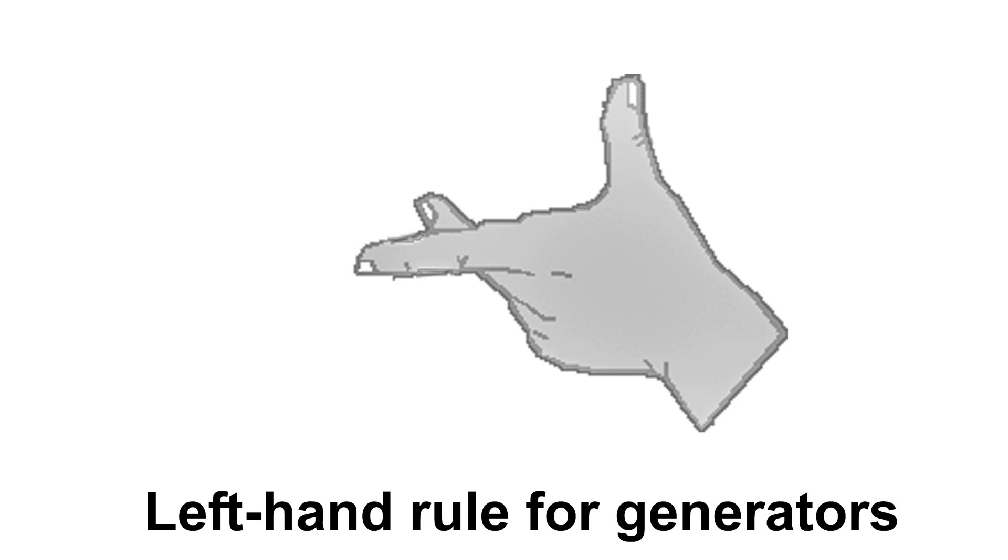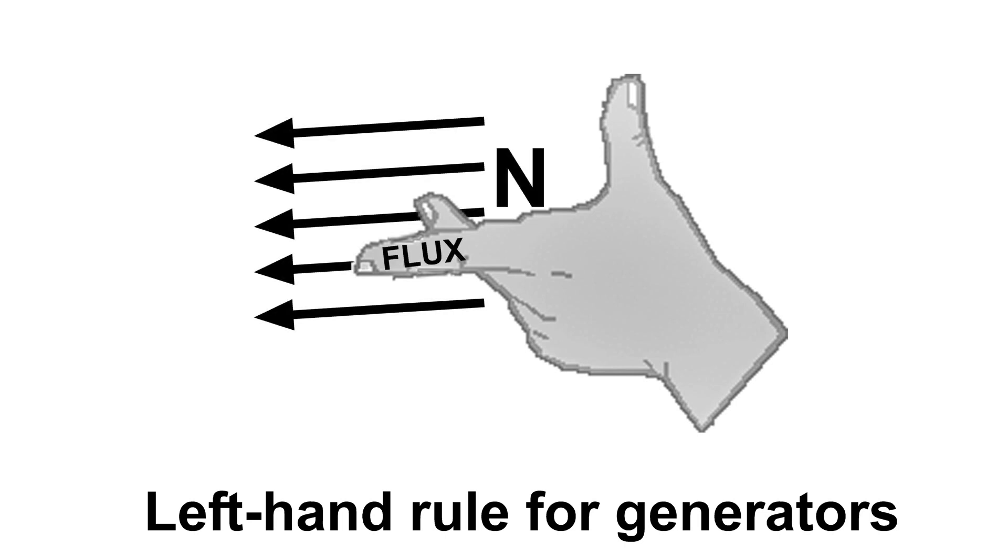This is the left-hand rule for generators. If we have a north pole here, the index finger will point in the direction of the magnetic flux. And if we move that wire in this direction, the wire being the center finger, the electrons will move in this direction from negative to positive.